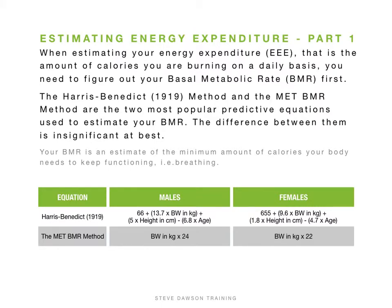We're going to break estimating energy expenditure up into three parts. The first part is your BMR — basal metabolic rate — which is the minimum amount of calories your body needs to keep functioning: things like breathing, brain function, and other really basic processes. There are a lot of different equations — probably six or seven — and the two most popular are the Harris-Benedict 1919 method and the MET BMR method.